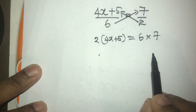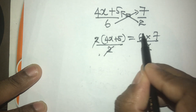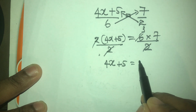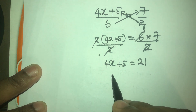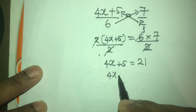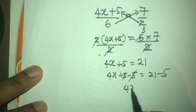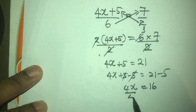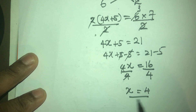Here we can divide both sides by 2. On the left side we get 4x plus 5, on the right side we are getting 21. Then we can subtract 5 from both sides. So x equals 16, then we can divide both sides by 4, and x becomes 4. So the answer is 4.